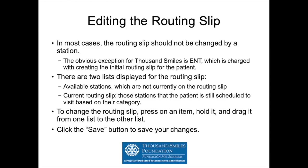The routing slip — in most cases you're not going to change this. The exception will be ENT, which will always modify it because they're the ones building the routing slip for cleft patients — both new clefts and returning clefts. On the routing slip editor, we see two columns: one with available stations, which are stations not currently in the routing slip that the patient hasn't visited yet; and the current routing slip, which are stations the patient is still scheduled to visit. To change the routing slip, press and hold an item for a couple seconds until it changes state, then drag it from one list to the other. Click save to save any changes.